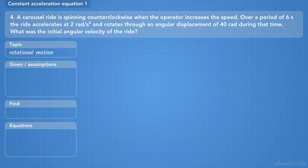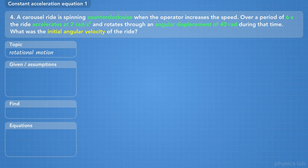A carousel ride is spinning counterclockwise when the operator increases the speed. Over a period of 6 seconds, the ride accelerates at 2 radians per second squared, and rotates through an angular displacement of 40 radians during that time. What was the initial angular velocity of the ride? The problem starts by telling us the ride has a counterclockwise — so positive — velocity, but it doesn't tell us what it is. How would we know this is angular acceleration and not tangential?